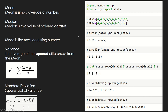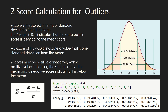Now let's talk about z-score. Z-score is measured in terms of standard deviation. The value of z-score could be either negative or positive: -3, -2, -1, 0, 1, 2, or 3. A z-score of 1 indicates that a value is one standard deviation from the mean, and a z-score of 2 indicates that a value is two standard deviations away from the mean.